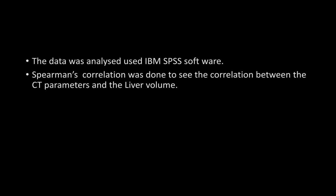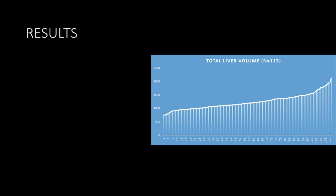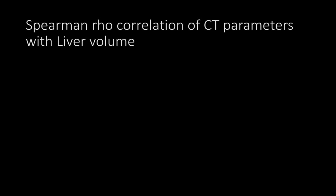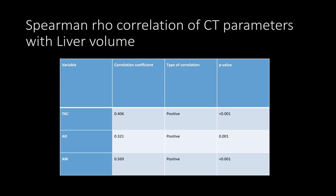The data was analyzed using SPSS software and Spearman's correlation was done to assess the correlation between CT parameters and liver volume. The mean liver volume derived from our study was 1237 ± 278 cubic centimeters, ranging from 742 to 2126 cubic centimeters. All three CT parameters had a strong positive correlation with liver volume, with significant p-values. Among them, abdominal width had the maximum correlation with liver volume, with a correlation coefficient of 0.569.